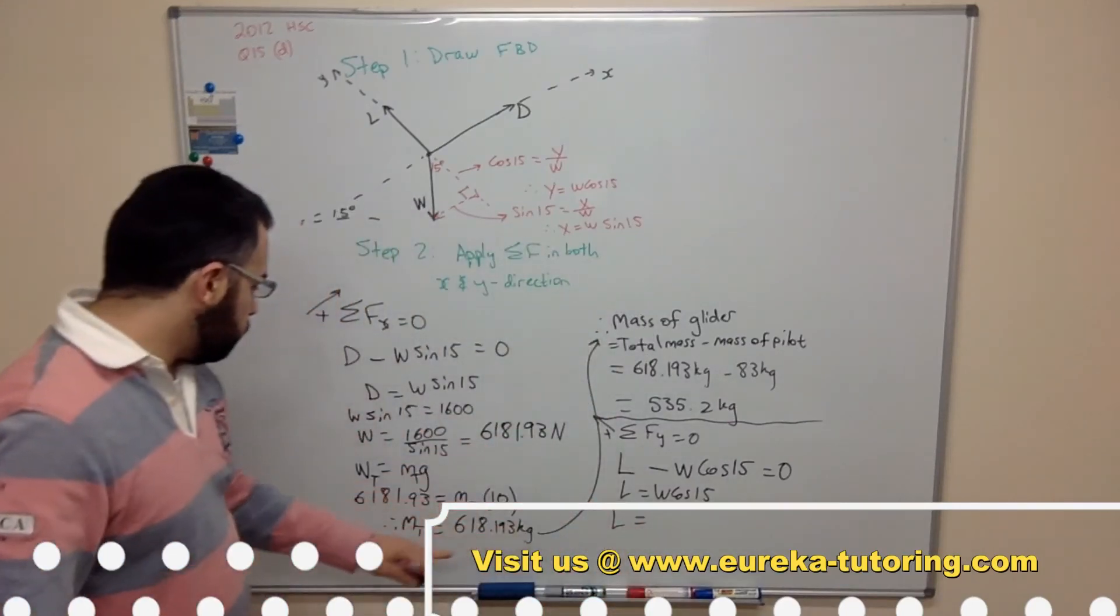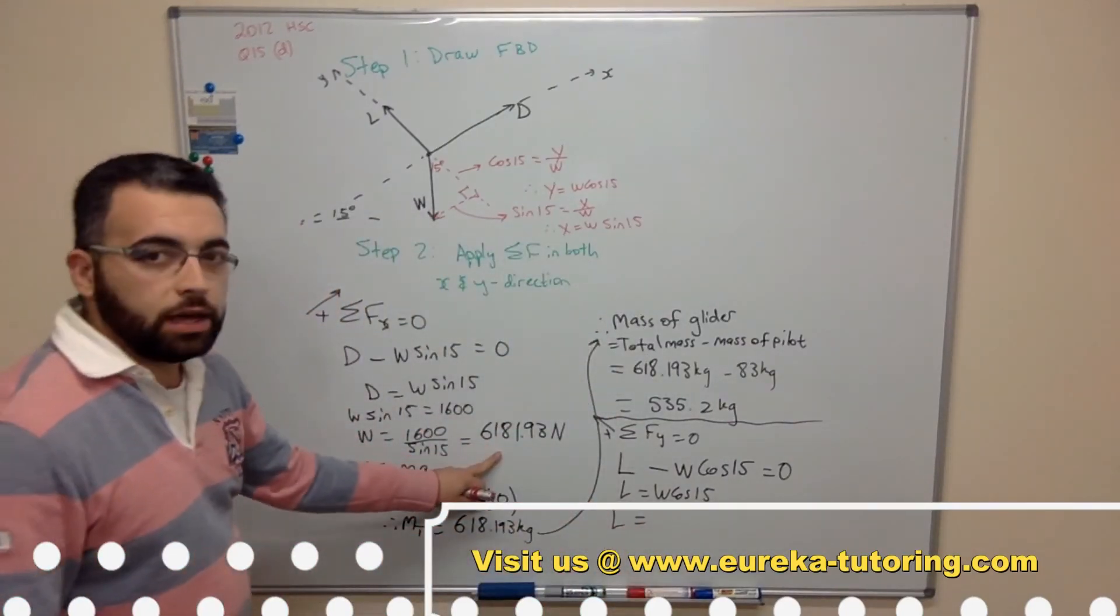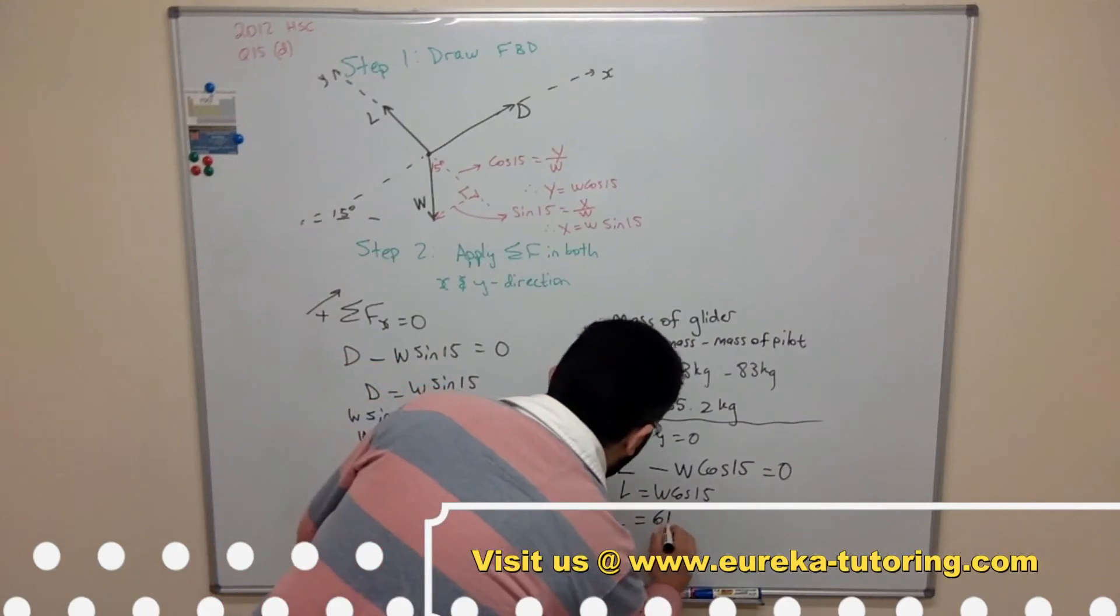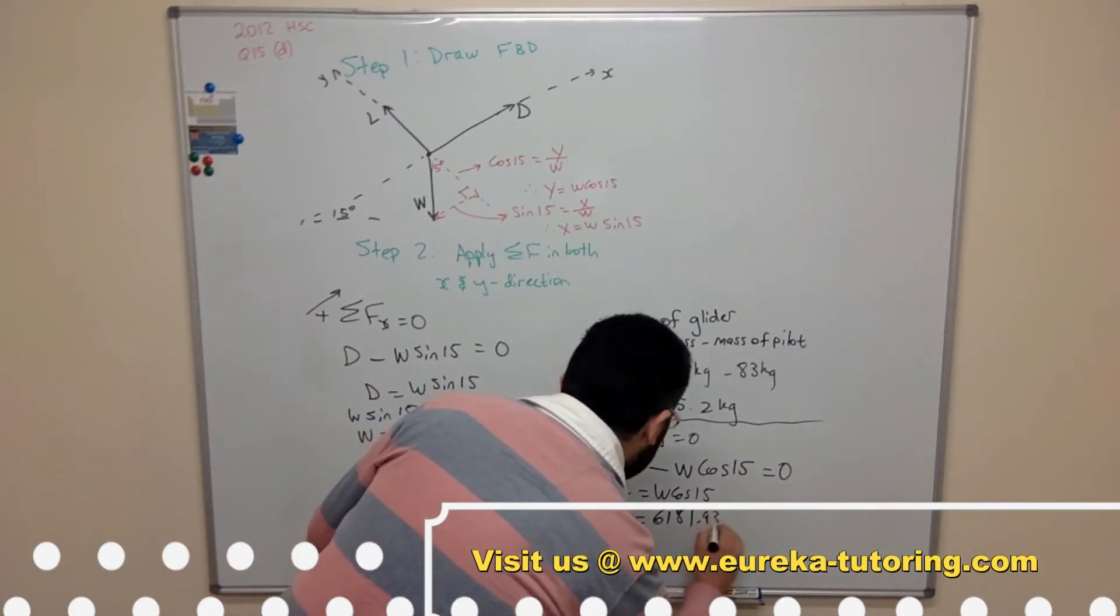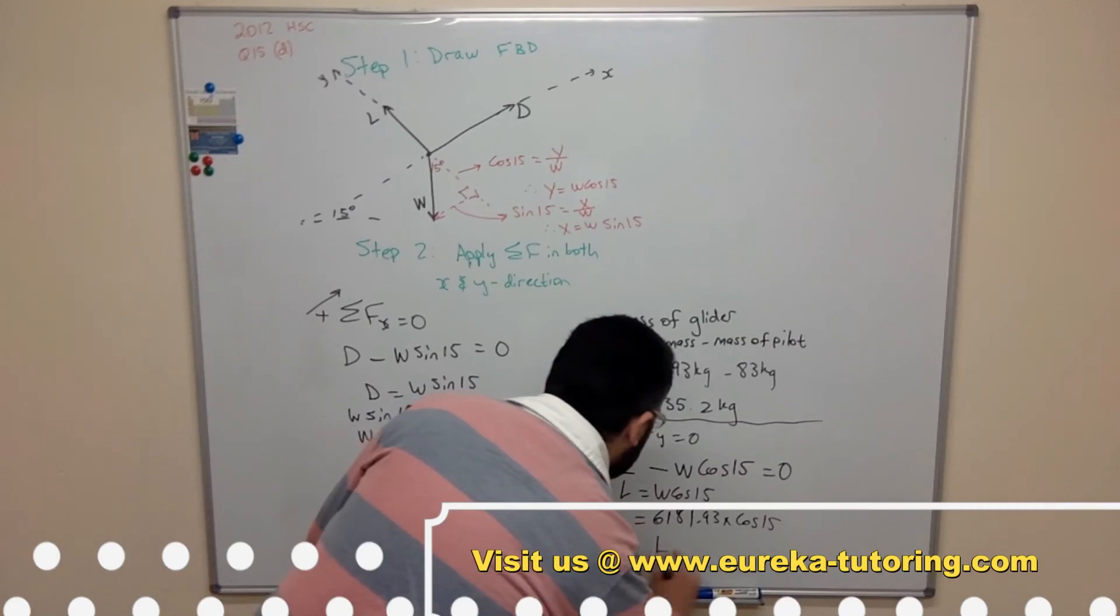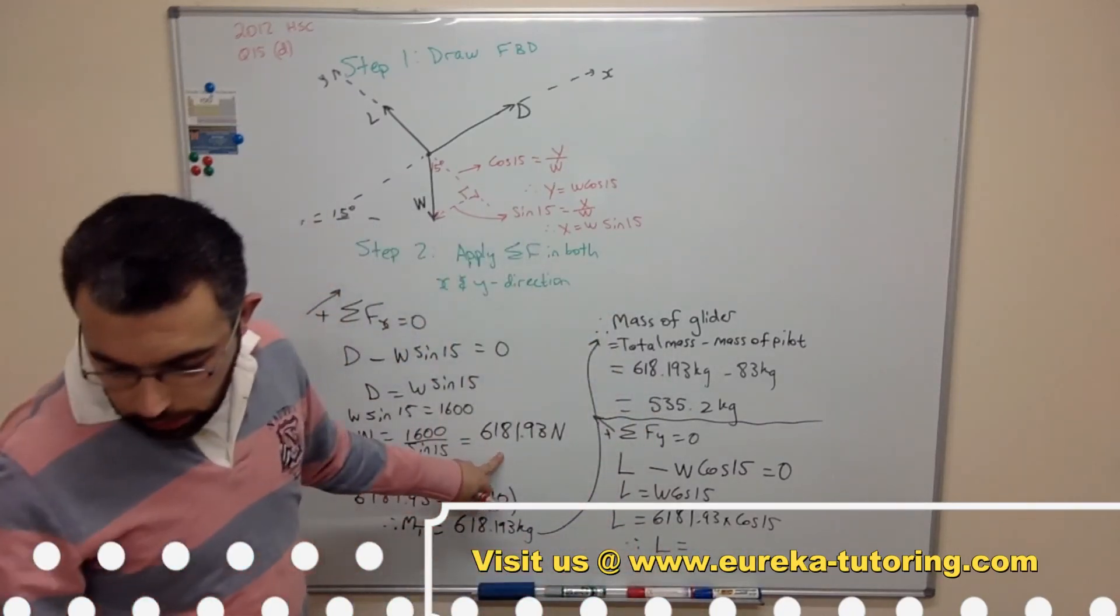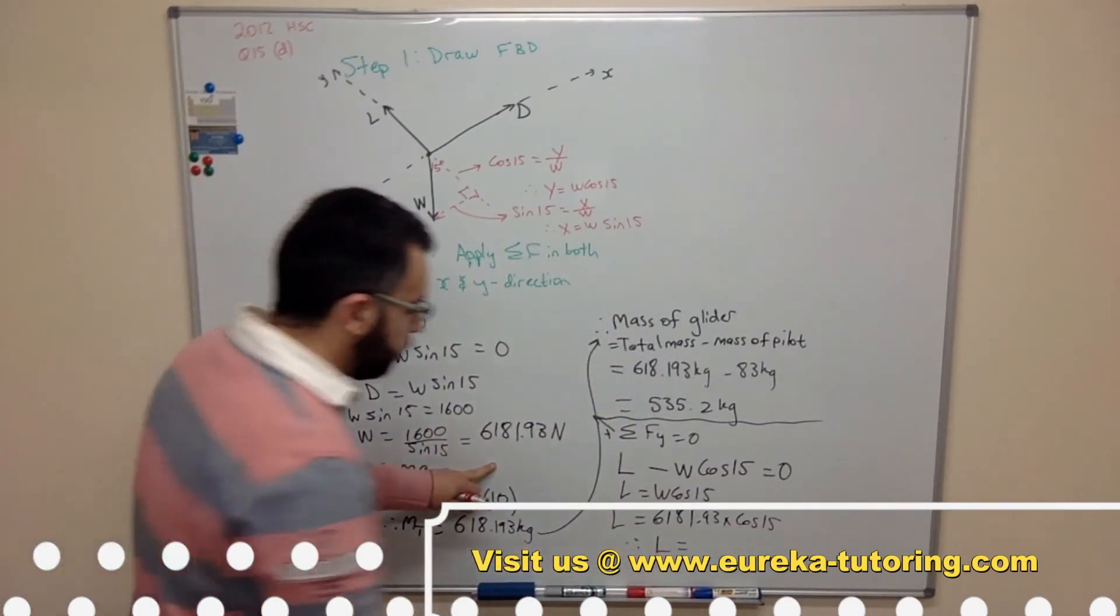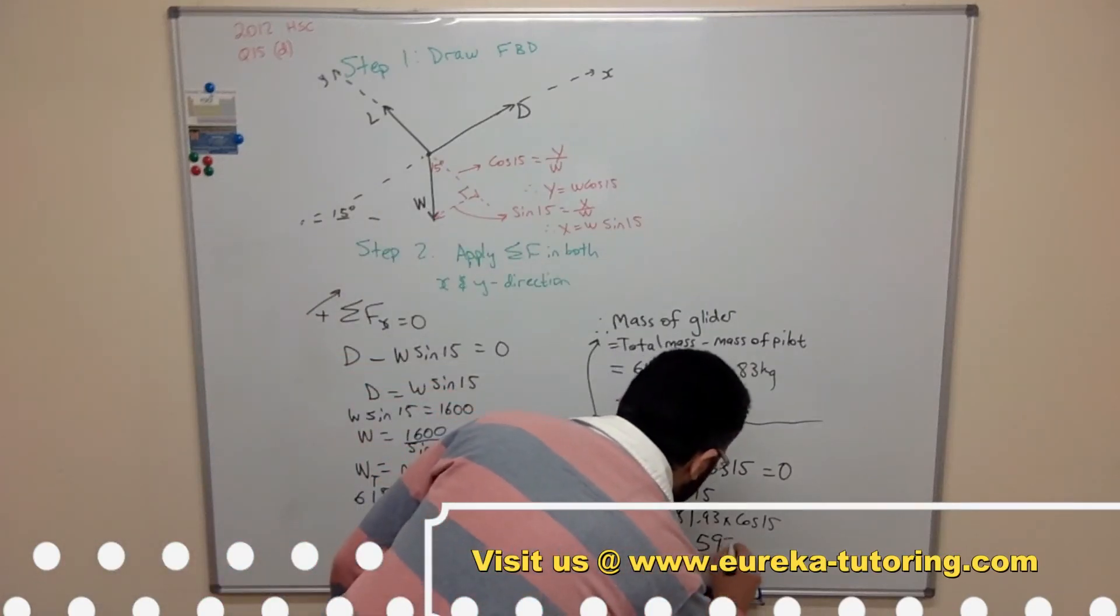Lift equals w which is our total weight, which was 6181.93 times cos 15. Therefore the lift equals 5971.29 newtons.